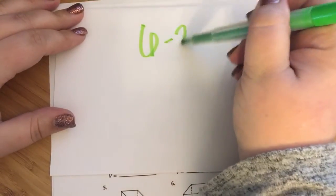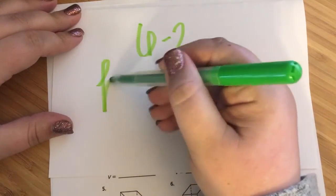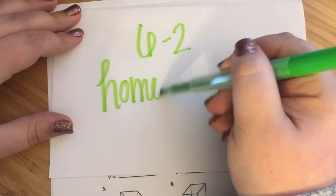6-2 homework with me, Ms. Billman, and Graham and Winnie, because they're sitting with me doing this.